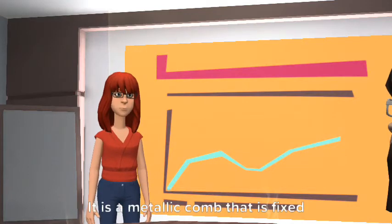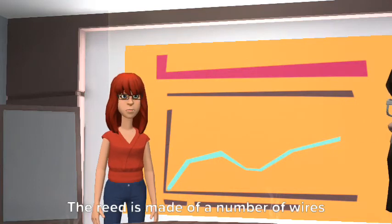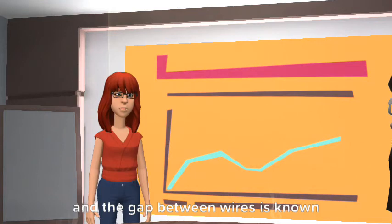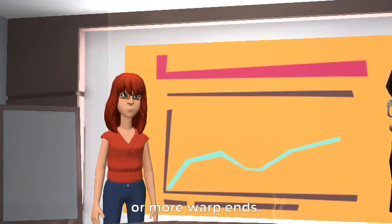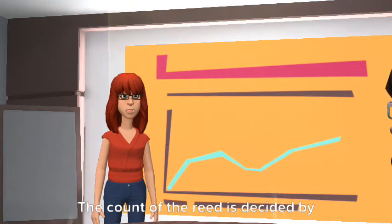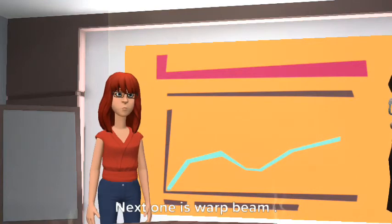The third one is reed. It is a metallic comb that is fixed to the slay with a reed cap. The reed is made of a number of wires and the gap between wires is known as dents. Each dent can accommodate one, two, or more warp ends. The count of the reed is decided by the number of dents in two inches.